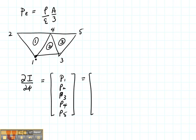Let's consider node 1. How many elements have node 1? Well, element number 1 has node 1 and element number 2 has node 1, so you simply add the P1 values from each of those.